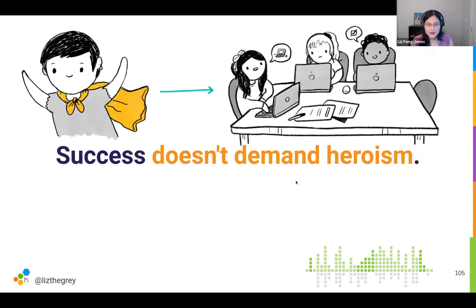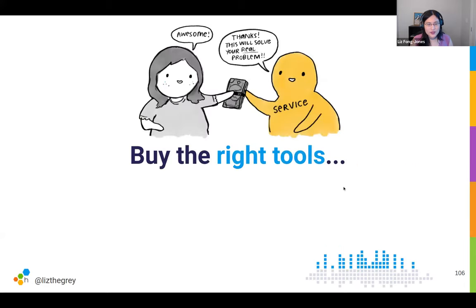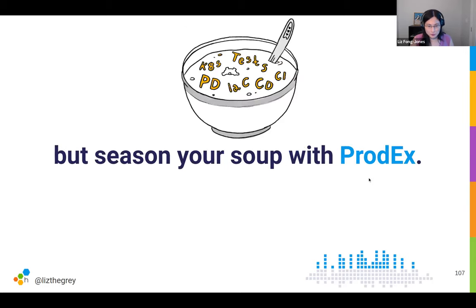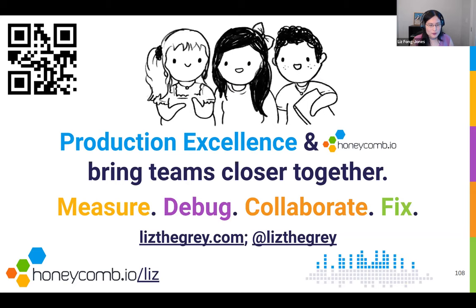We're all on the same team here — we're all trying to make our service better for users. You don't have to be a hero to run a successful service. You just have to have the right culture, and yes, sometimes the right tools can help — but think about the culture first, then decide what tools are going to help you build the right platform. Production excellence can really help you create a culture where engineers feel it's safe to ship and able to make forward progress. Measure when things are too broken with SLOs, debug effectively with good quality observability, collaborate across team boundaries to fix issues, and close the feedback loop to defend in depth against systematic failures.